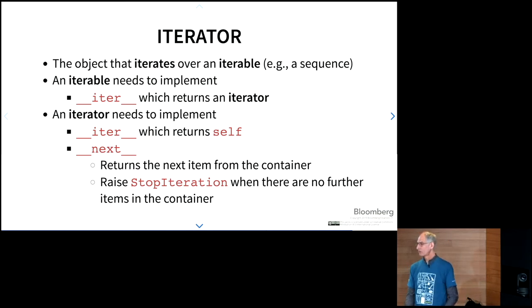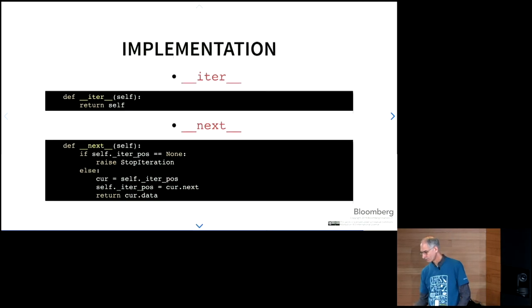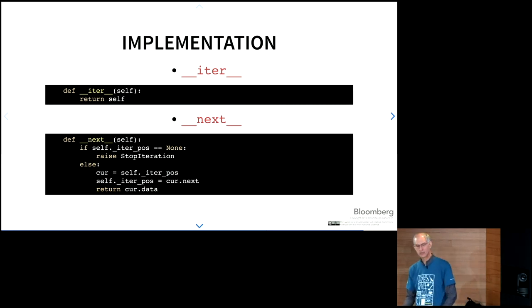An iterator is an object that iterates over an iterable. An iterable needs to implement the dunder iterator, which we saw before in the container. The iterator needs to implement dunder iter as well, but it just needs to return itself. So if you call iter on something that is an iterator, it just returns you a reference to itself. But an iterator also needs to implement dunder next. And the dunder next is basically how you step through the iteration. And it should return the next item from the container. And when you reach the end of the container, it should raise a stop iteration. And this is the internal workings of Python are very much reliant on this.